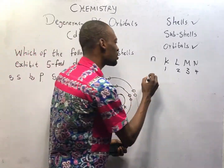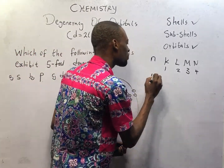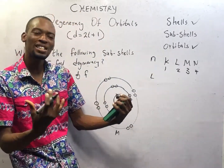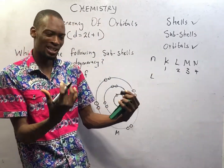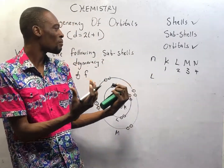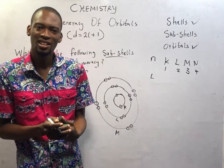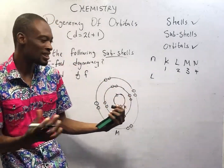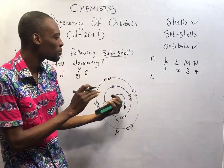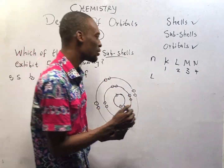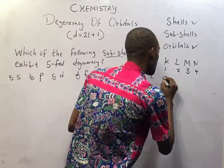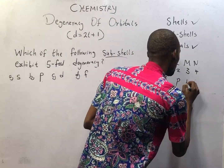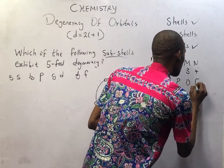Now, we have the azimuthal quantum number represented by L. The azimuthal quantum numbers tell us about the subshells. They are simply S, P, D, and F.